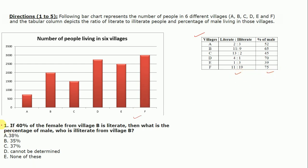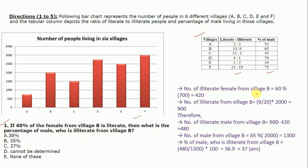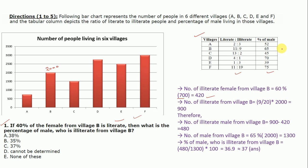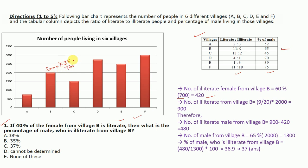Question 1: If 40% of the females from village B are literate, then what is the percentage of males who are illiterate from village B? The number of illiterate females from village B is 60%, because 40% are stated as literate in the question, so the remaining 60% are illiterate. Number of illiterate females from village B = 60% of 700 = 420. We take 700 because the total pupils in village B is 2000 and 65% are male, so 35% are female, giving 700 females.